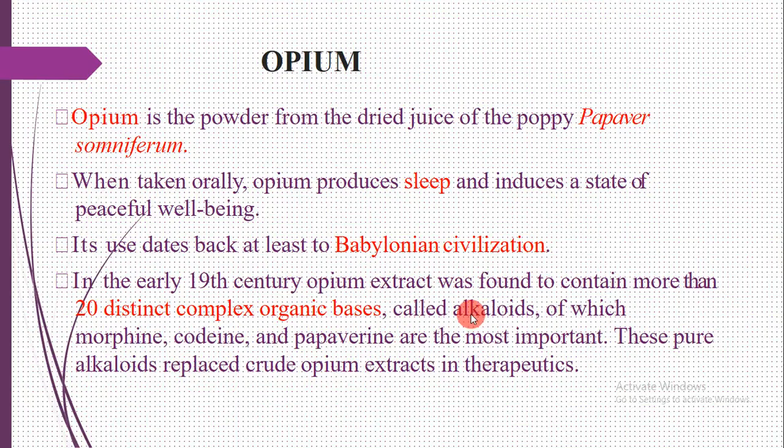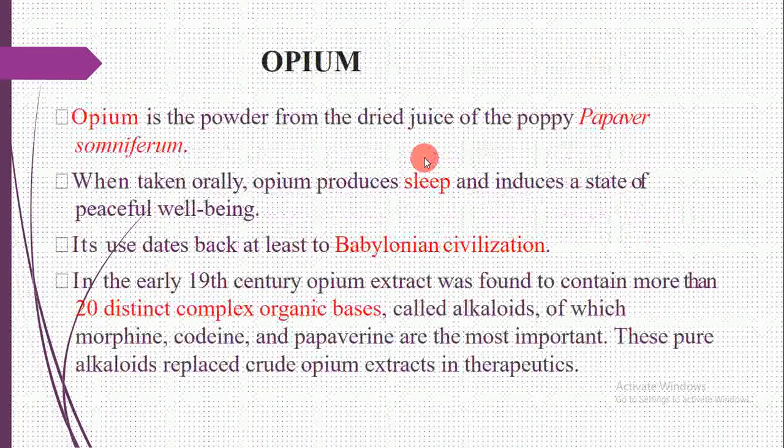In the early 19th century, opium extract was found to contain more than 20 distinct complex organic bases called alkaloids. These alkaloids extracted from opium include morphine, codeine, and piperidines. These are the most important, and these pure alkaloids replaced crude opium extract in therapeutics.